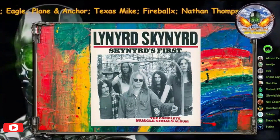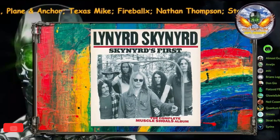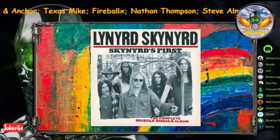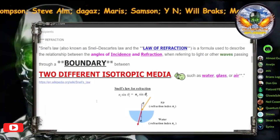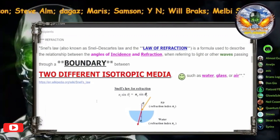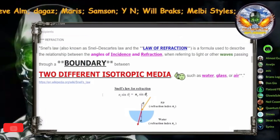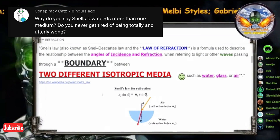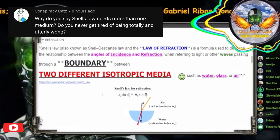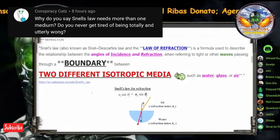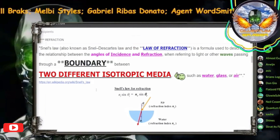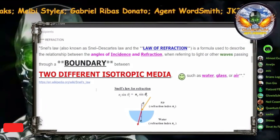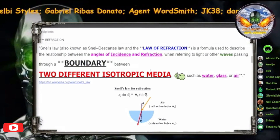I'm gonna have to do something about this — I don't get it. Snell's law has no boundaries, right? I put the first comment in the disco chat. Why do you say Snell's law needs more than one medium? Do you never get tired of being totally, utterly wrong? Okay, from Wiki — I've got it right up on screen for everyone to see. So, 'frady cats,' second law of thermodynamics violator, doesn't even know what a mirage is, says that Snell's law doesn't need two different media.